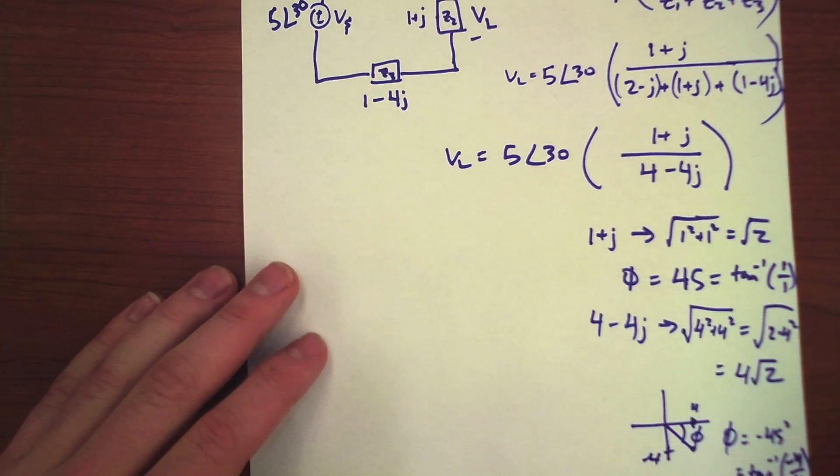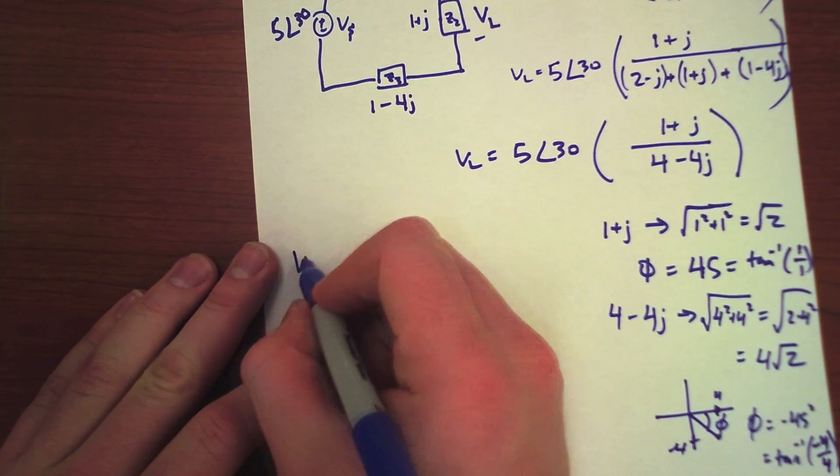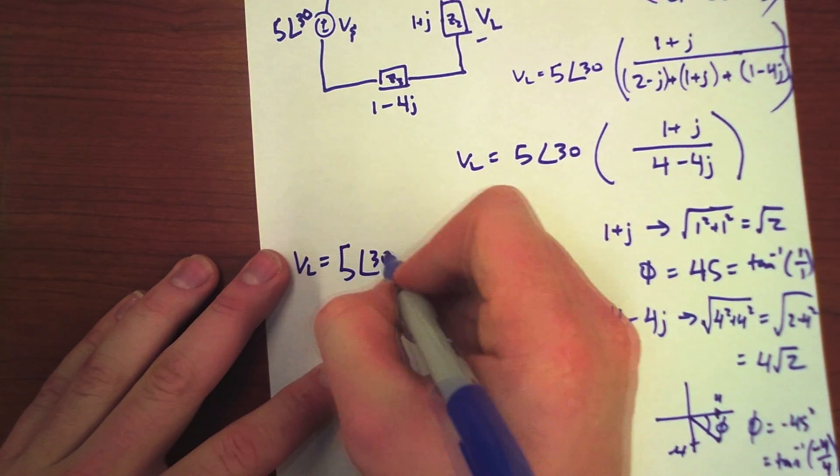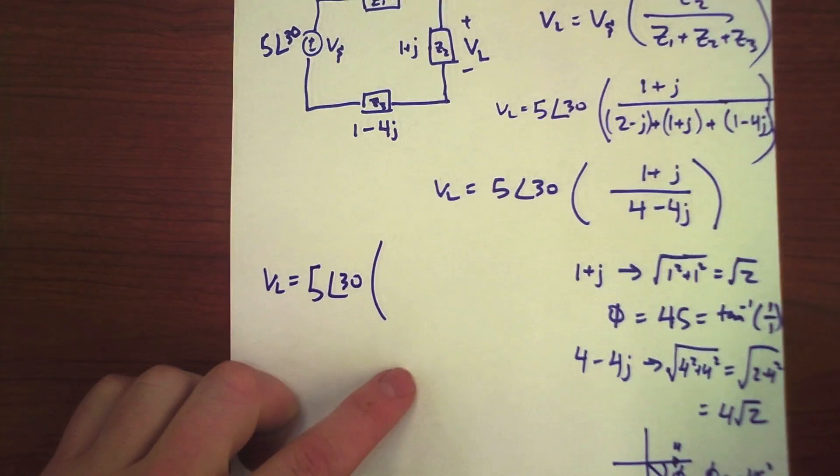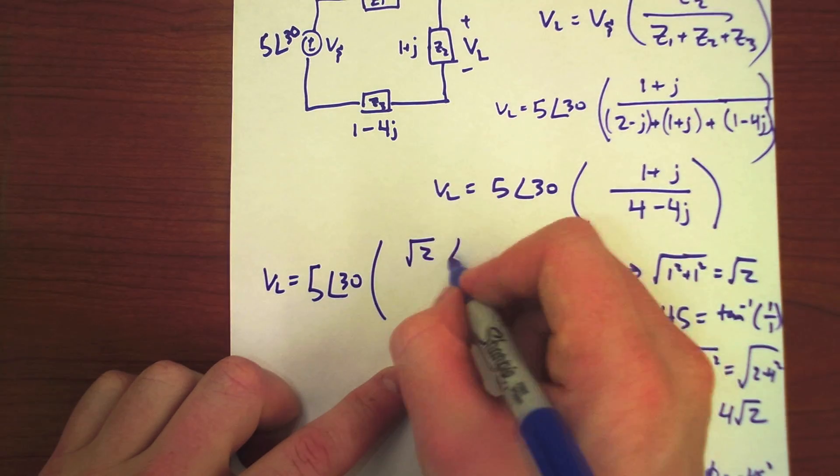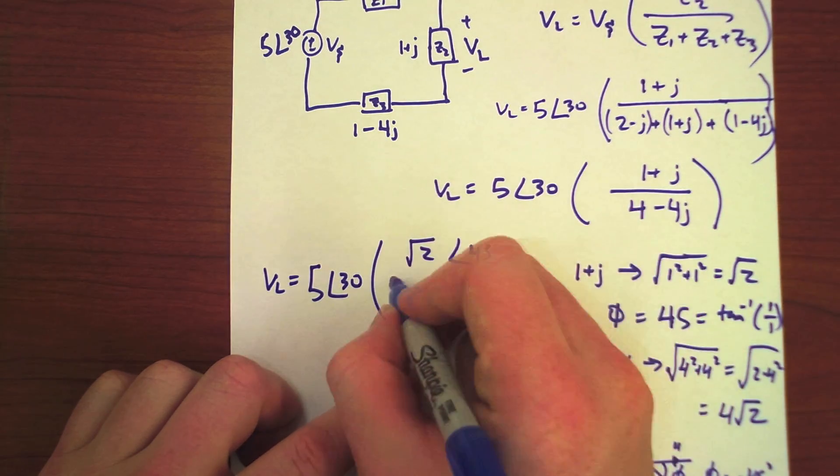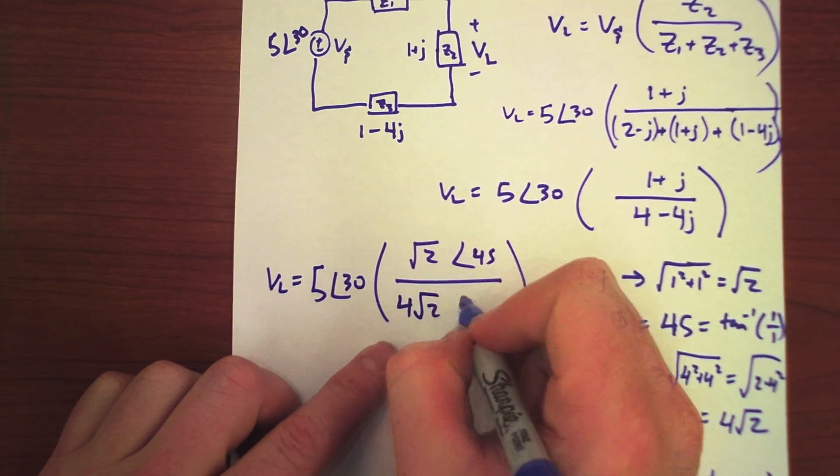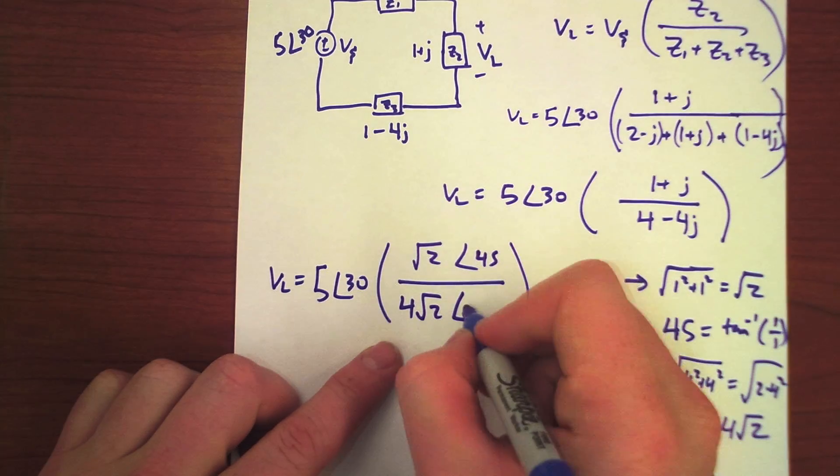So, now that we have that, let's do VL equals 5 angle 30 times radical 2 angle 45 degrees divided by 4 radical 2 angle minus 45 degrees.